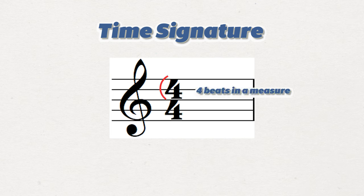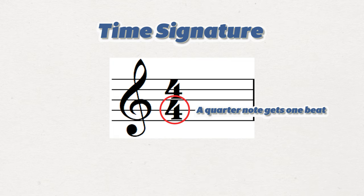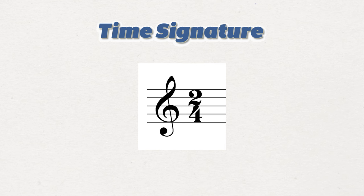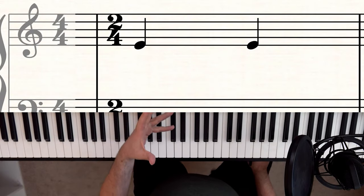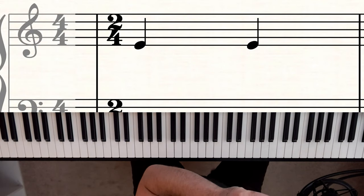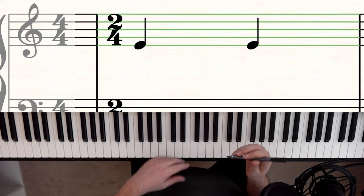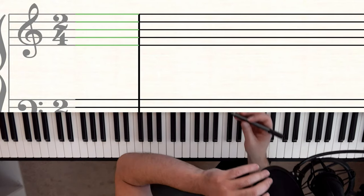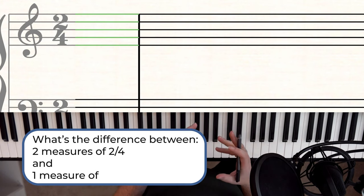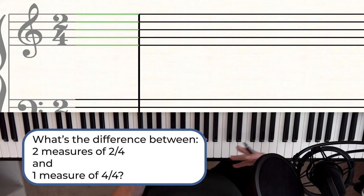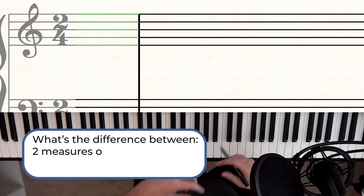Remember the time signature — the top number tells you how many beats are in each measure, and the bottom number tells you what note gets one beat. We've been talking about four-four, where four beats are in a measure and the quarter note gets one beat. We're going to learn about two other time signatures that end in four: two-four and three-four. Two-four is like four-four except you only have two beats per measure, so you can fit two quarter notes or one half note.